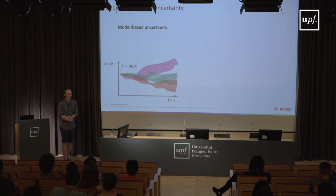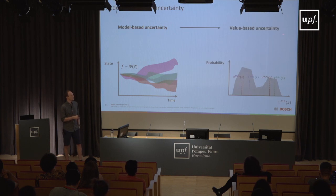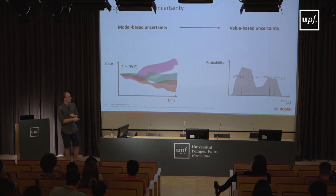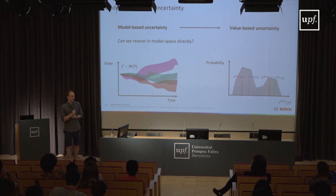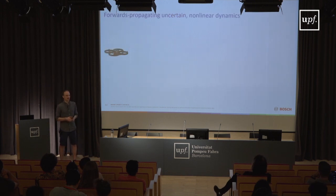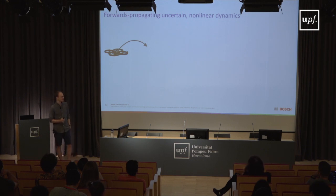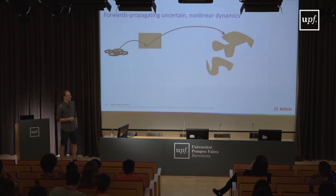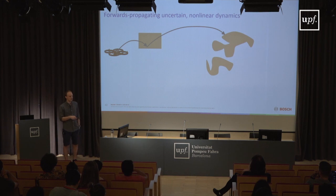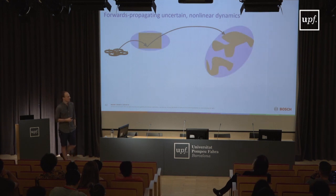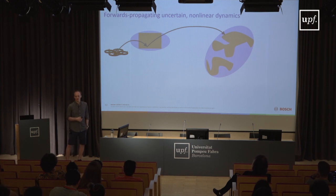We've talked about model-based uncertainty mapped to value-based uncertainty, either by learning different critics per model or by learning the full distribution of values. The natural next question is: can we do this directly in model space? Going back to the previous lecture — yes you can. If I predict ahead under my models I get these complicated, potentially multimodal distributions over states, and one thing you can do is over-approximate them with something tractable like ellipsoids.